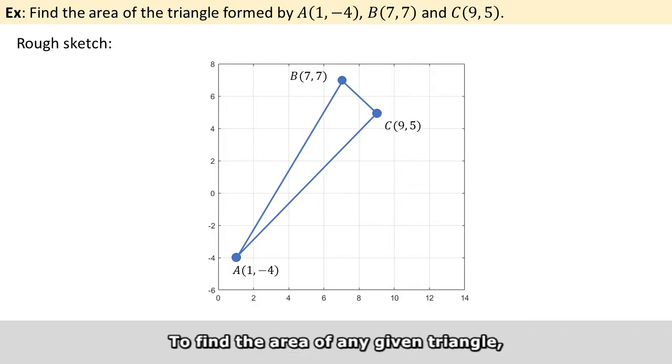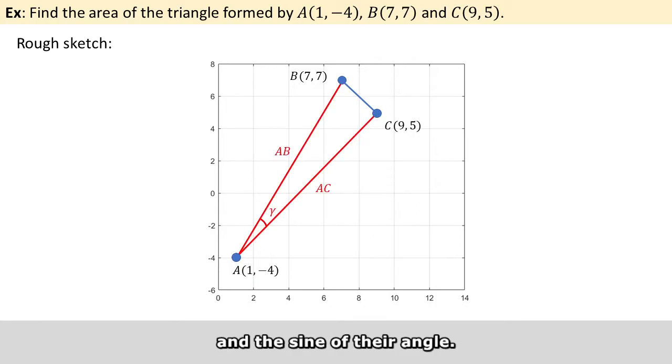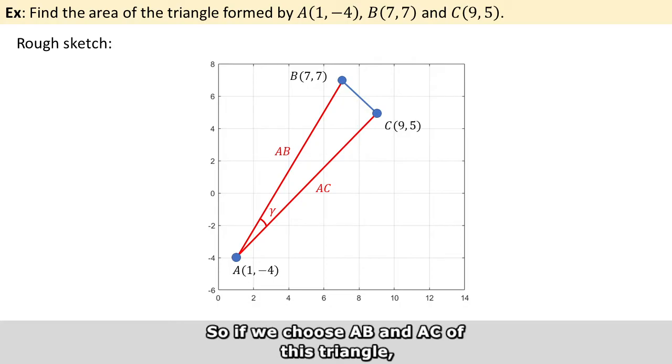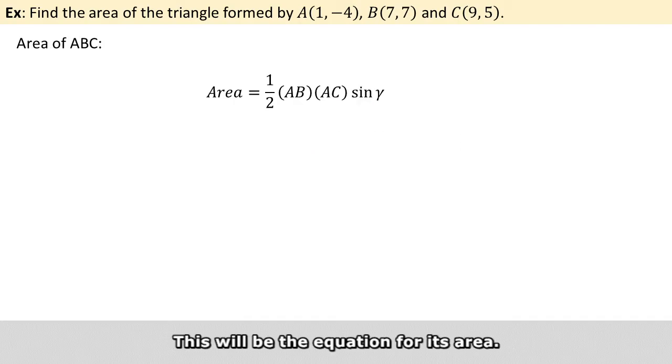To find the area of any given triangle, we can take half of the product of any two sides and the sine of their angle. So if we choose AB and AC of this triangle, the angle gamma will be the angle we need. So this will be the equation for its area.